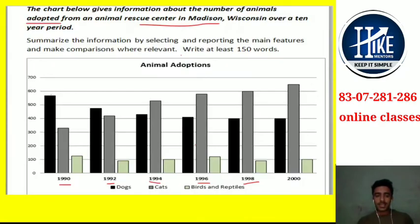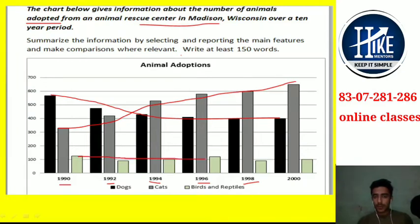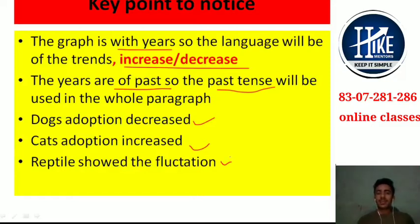If I talk about trends: the number of dog adoptions is increasing during the period, the cats are increasing, and if I talk about the reptiles, their number is very low. So simply, these are the trends we are discussing — dog adoptions are increasing, cat adoptions are increasing, and reptiles are also increasing slightly. Now you clearly know what to do with the graph.